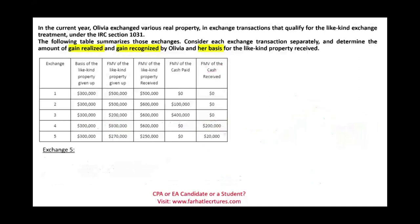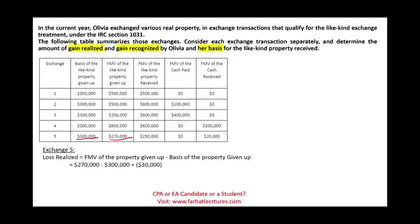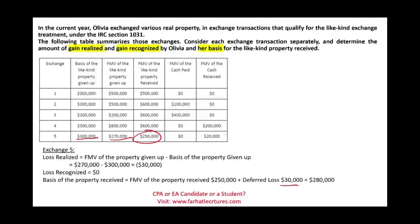Exchange 5: basis is $300,000, fair market value is $270,000 — so we have a loss of $30,000. Again, losses are always deferred, so gain or loss recognized equals zero. The basis of the new property is the fair value of the asset received plus the deferred loss — adding $30,000 — giving us a basis of $280,000.